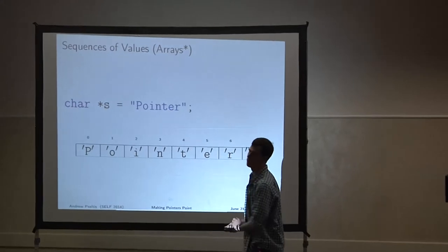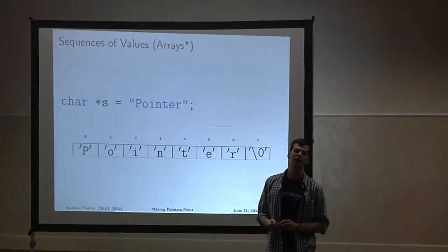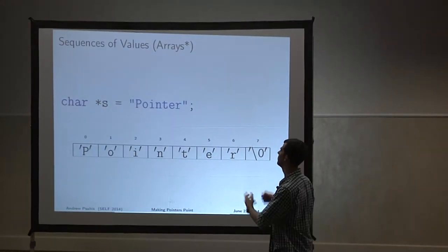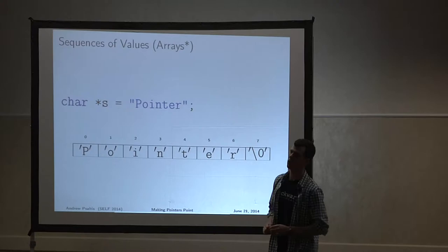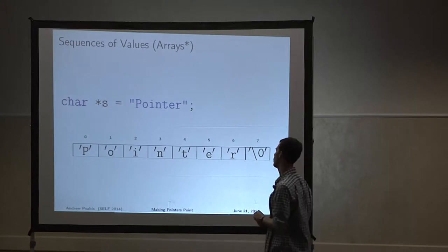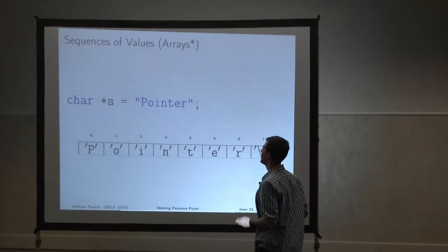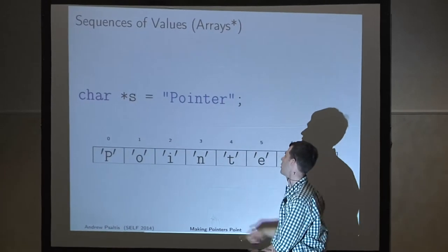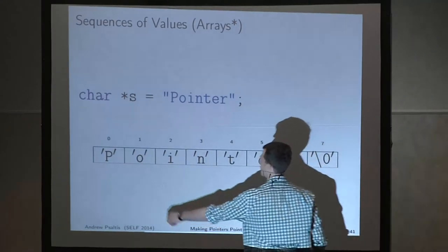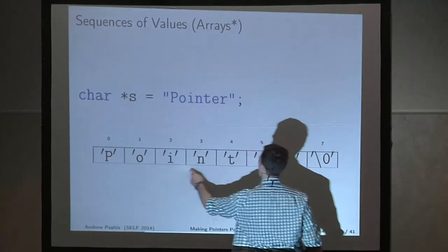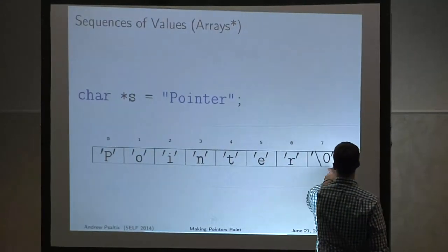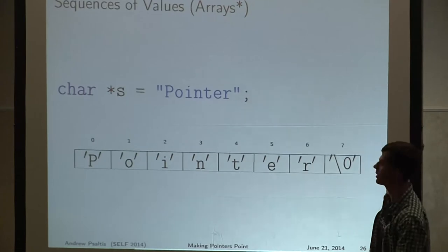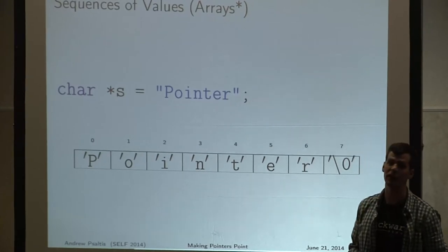Another thing you can do with pointers is have stuff behind pointers. The thing about C is that C strings are in fact arrays, or pointers to things. In this case, the string pointer here is just a sequence of eight characters. You have to have the null terminator on the end — the backslash zero — which is called the null terminator.